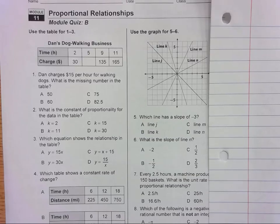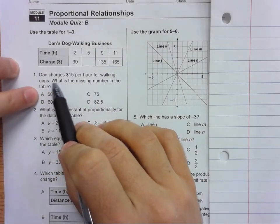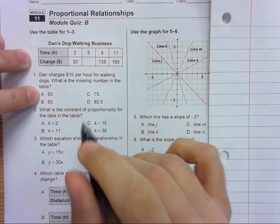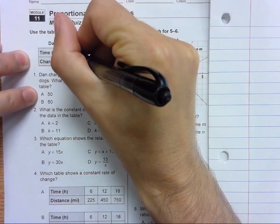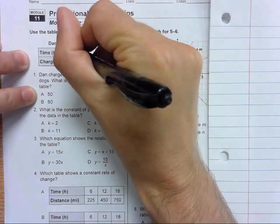Alright, let's look at number one. Dan charges $15 per hour for walking dogs. What's the missing number in the table? Okay, so what we could do here is throw in an extra line: $15 per hour. So one hour is $15.